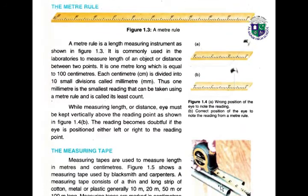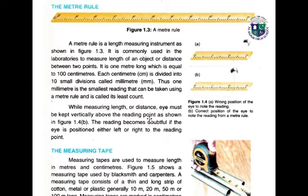The first measuring instrument is the meter rule. A meter rule is a length-measuring instrument commonly used in laboratories to measure the length of an object or distance between two points. It is one meter long, equal to 100 centimeters. Each centimeter is divided into 10 small divisions called millimeters. Thus, one millimeter is the smallest reading that can be taken using a meter rule — this is called its least count. While measuring, the eye must be kept vertically above the reading point; the reading becomes doubtful if the eye is positioned either left or right.